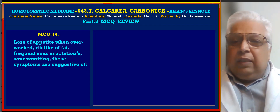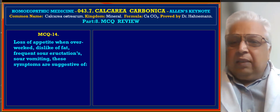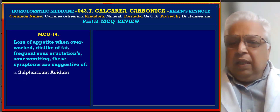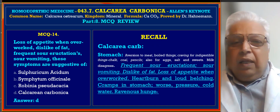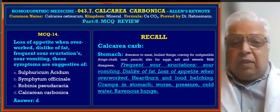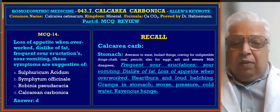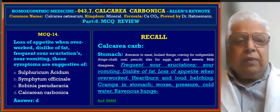MCQ 14: Loss of appetite when overworked, dislike of fat, frequent sour eructations, sour vomiting — suggestive of which remedy among Sulphuric Acid, Symphytum Officinale, Robinia, and Calcarea Carbonica? Answer is D, Calcarea Carb. Reference from Boericke's Materia Medica, stomach section: frequent sour eructations, sour vomiting, dislike of fat, loss of appetite when overworked, heartburn, loud belching, cramps in stomach, worse pressure, ravenous hunger.